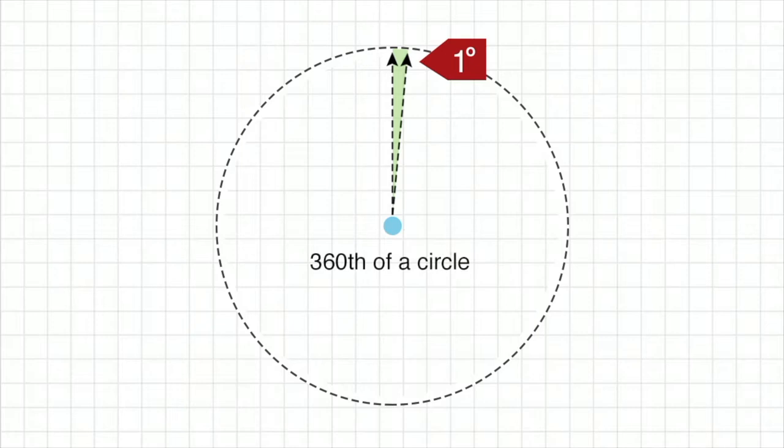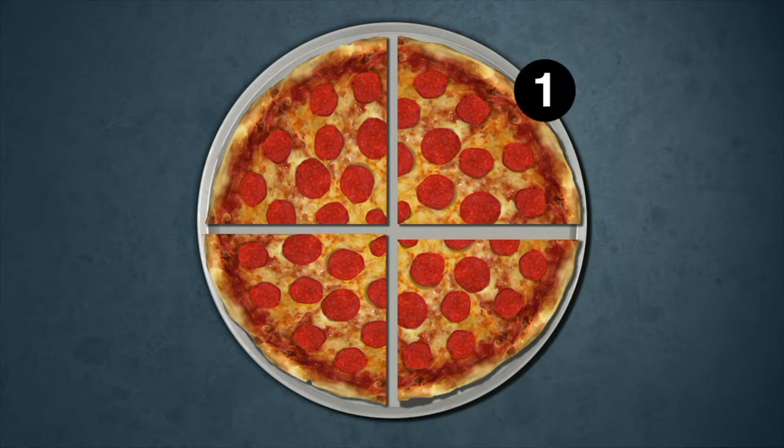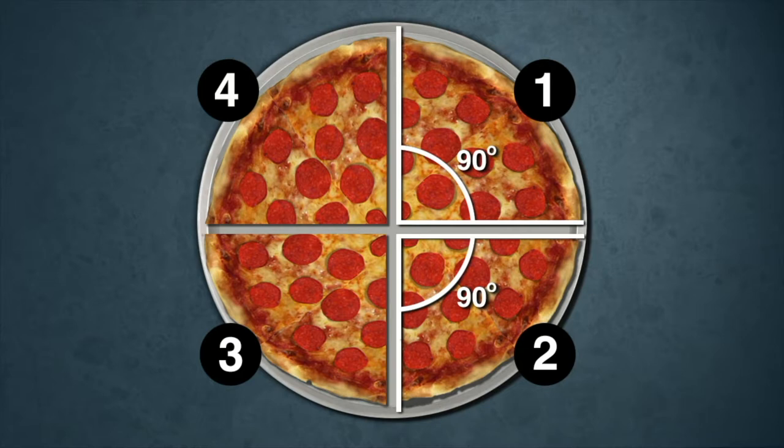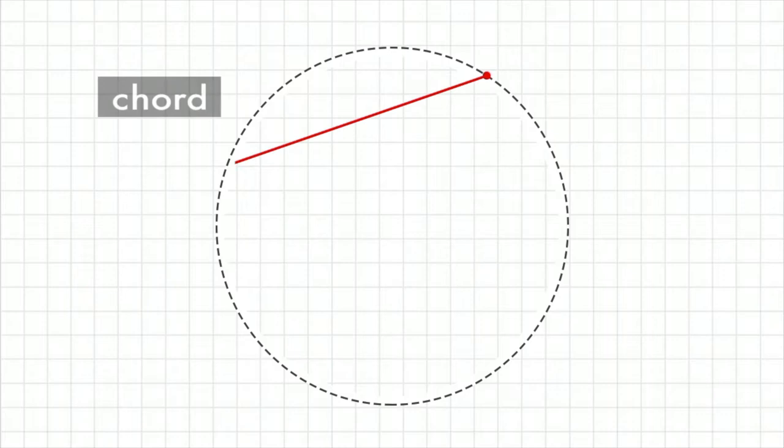An angle of 1 degree is a 360th of a circle. So a circle has 360 sectors with an angle of 1 degree. Each piece of a pizza sliced into 4 is a sector. Each pizza slice has a 90 degree angle at the circle center.